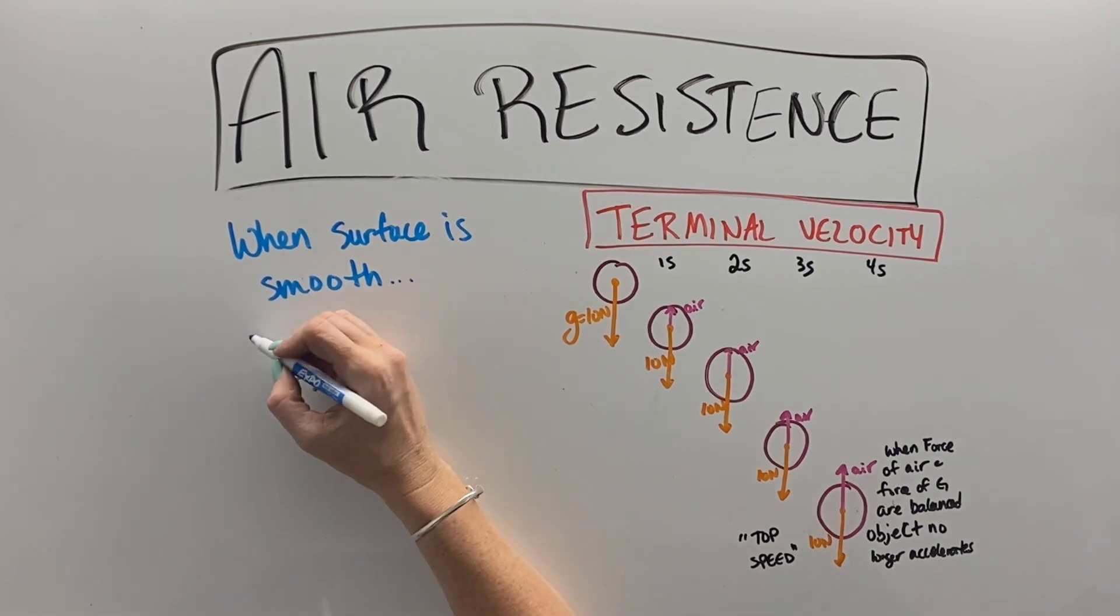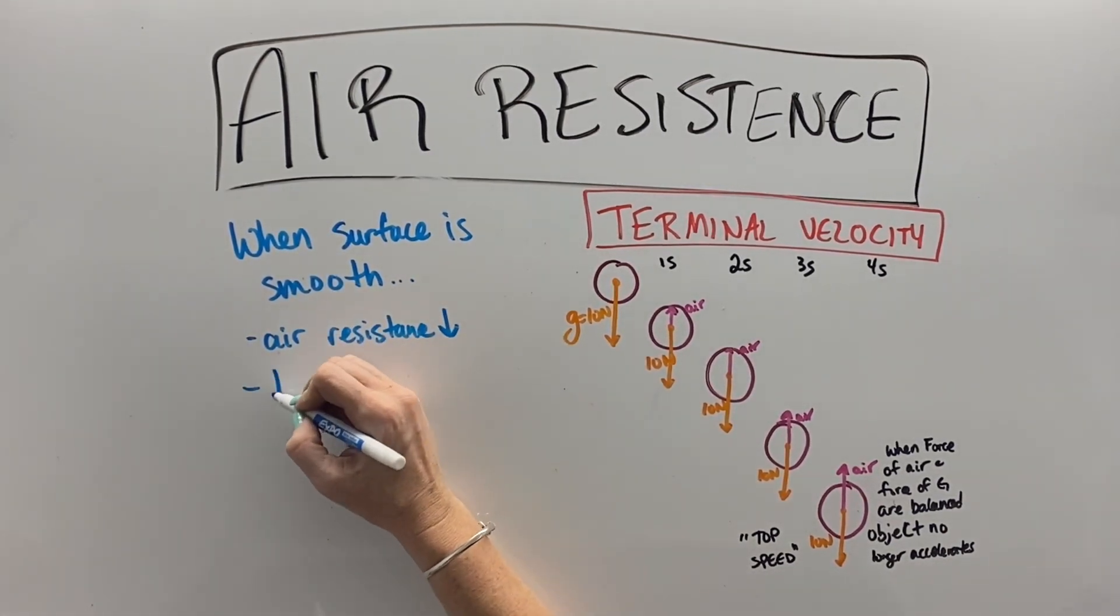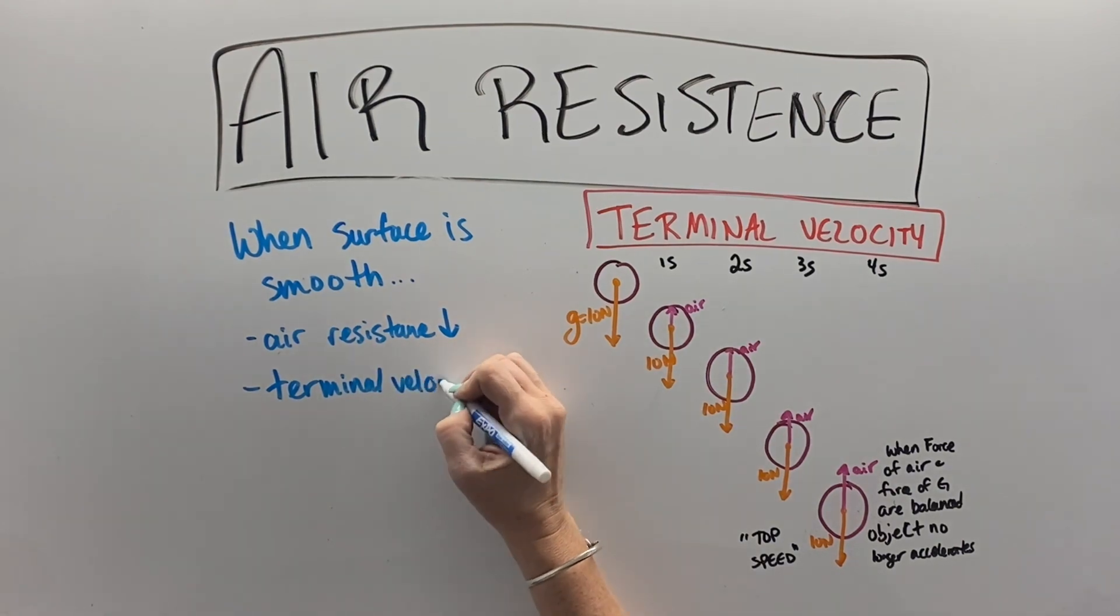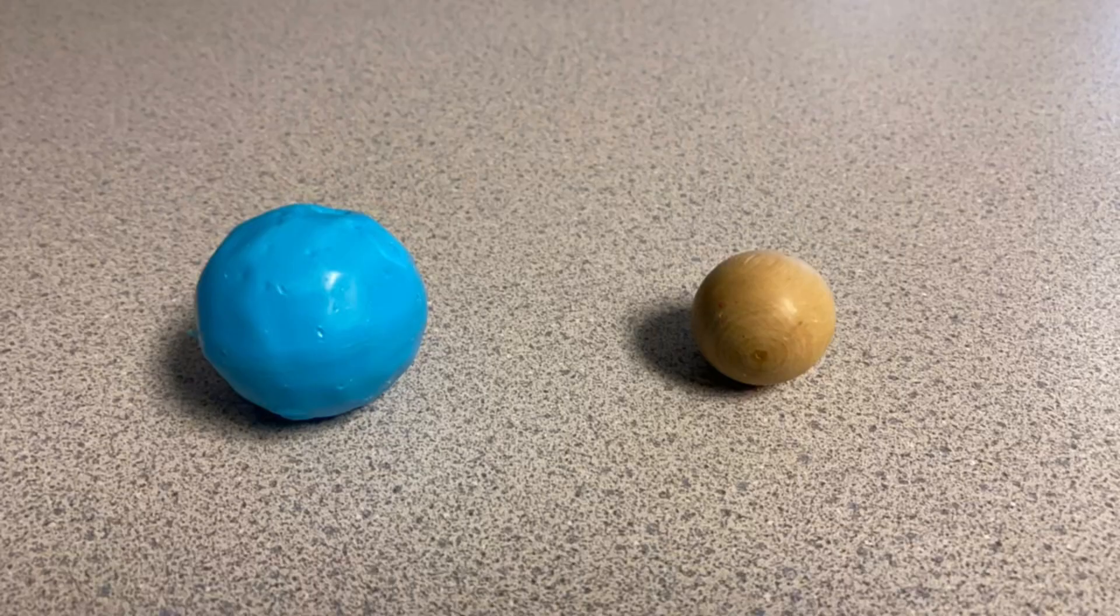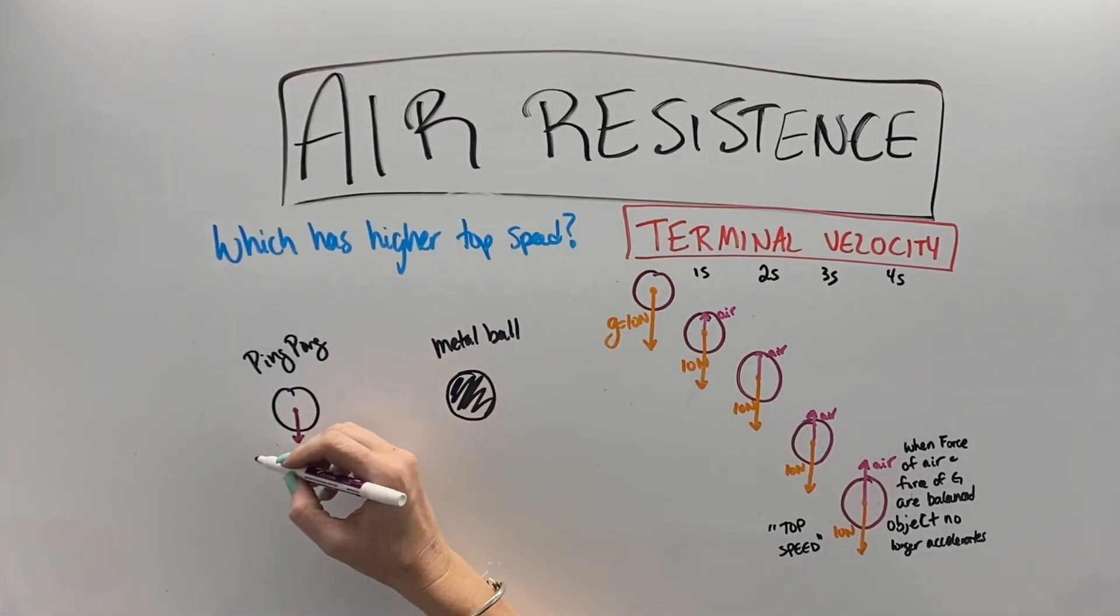When the surface is really smooth, that makes for less air resistance, which then causes the terminal velocity of the object to be higher. So if we have a bumpy ball and a very smooth ball, we can see here that the smooth ball hits the ground first.